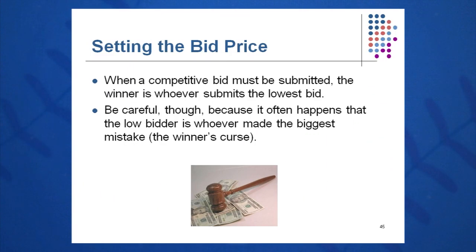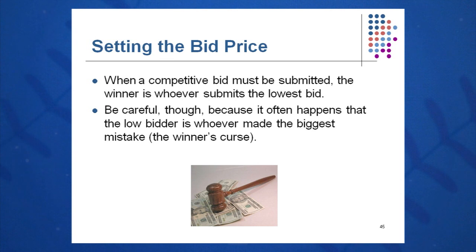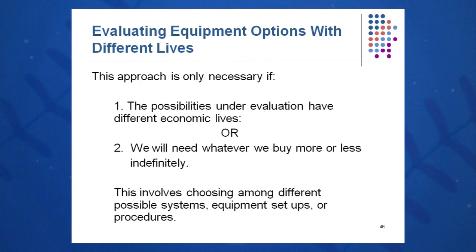Special case number two involves setting a bid price. Say you are a local road builder submitting competitive bids for a stretch of highway. Often the winner is whoever submits the lowest bid, but you can fall into the bidder's curse — bidding lower and lower until you run yourself out of business. The approach is still the same: income statement, balance sheet, cash flow on any new project to avoid that trap.